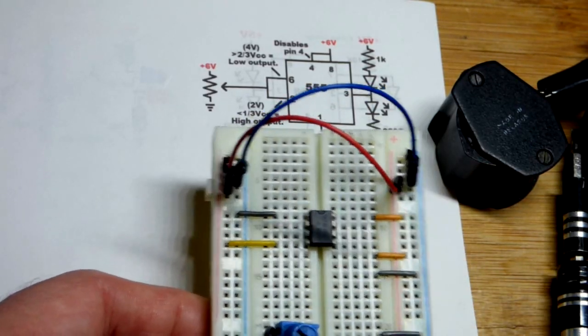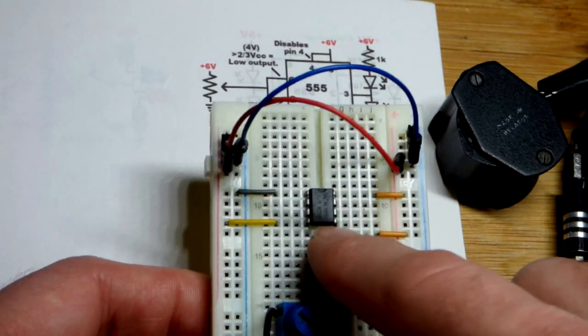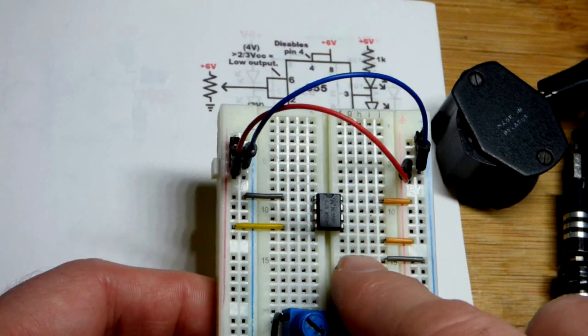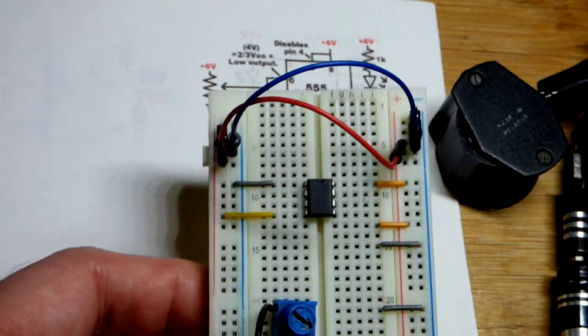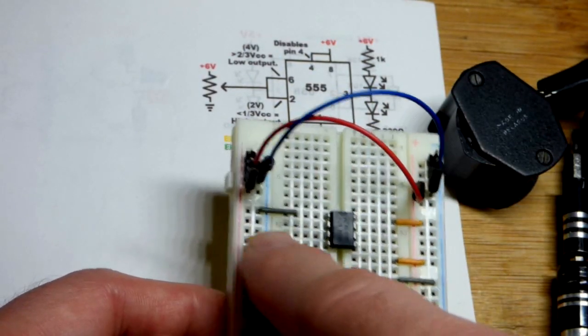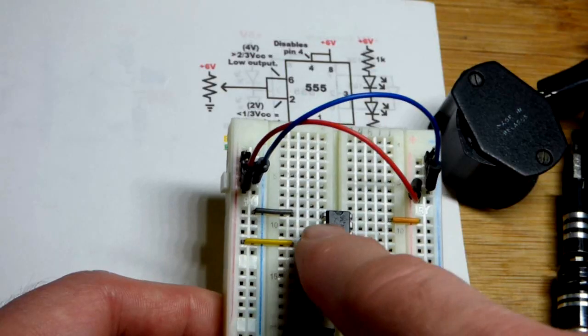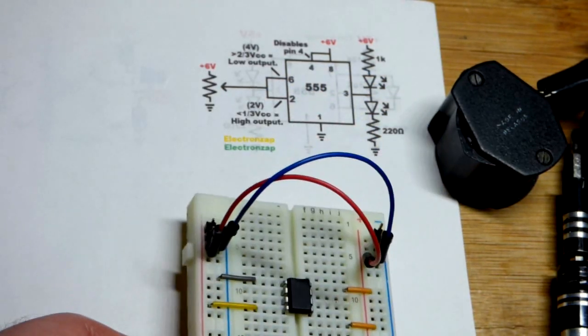It also sets the one-third and two-third voltages internally right there that some of the input pins respond to. You can adjust them with pin five, be aware of that, but that's a more complex topic. We're not going to dwell on that. We disable pin four. Pin four is waiting for a connection to ground to force the output low, pin number three, and to keep it low. Be aware of that.